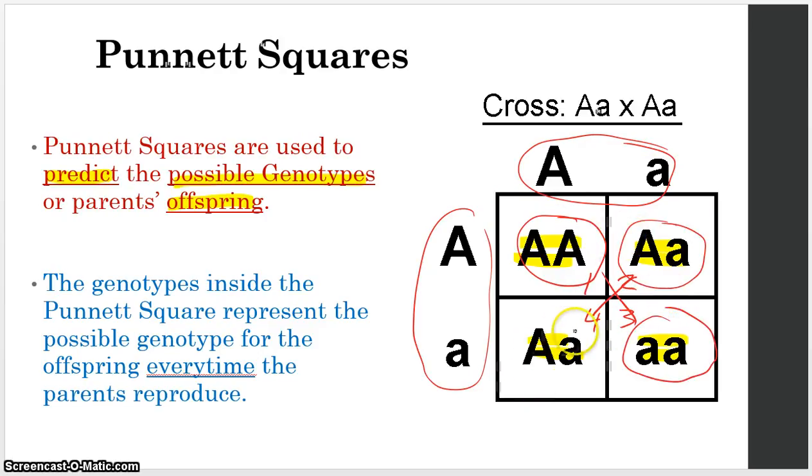Okay? We're not saying first kid, second kid, third kid, fourth kid, or anything like that. Every single time that they reproduce, they're going to get one of these four genotypes.